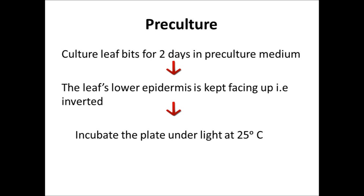Preculture: The leaf bits are cultured for 2 days in preculture medium. The leaf's lower epidermis is kept facing up, i.e., in an inverted position. Then the plates are incubated under light at 25 degrees Celsius.